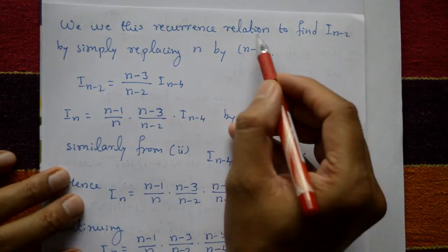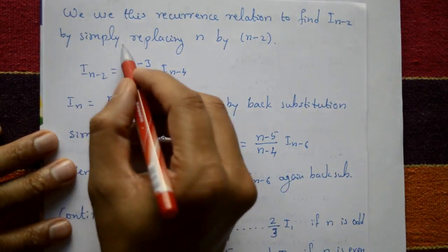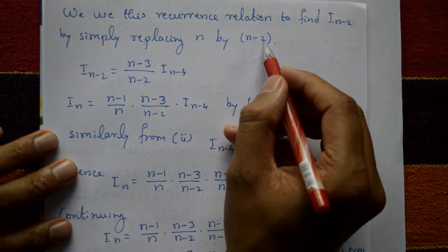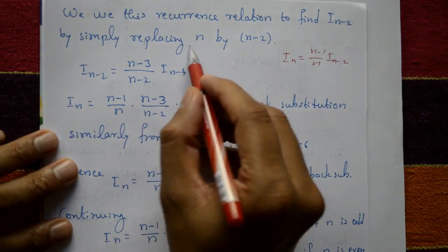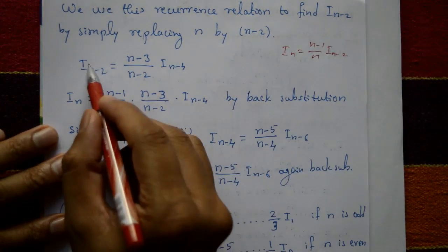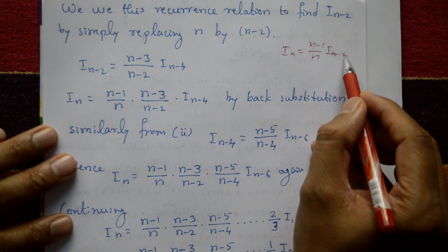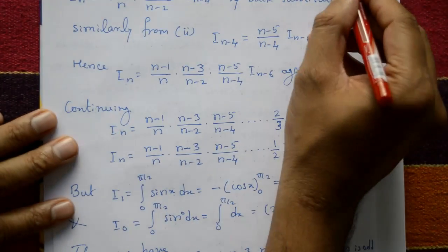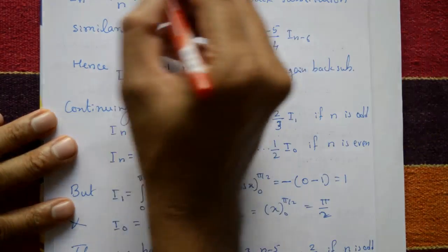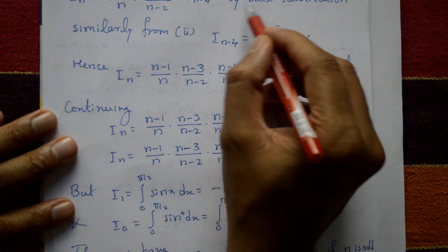Using this recurrence relation to find Iₙ₋₂: replace n by n−2 in Equation 2 to get Iₙ₋₂ = (n−3)/(n−2) · Iₙ₋₄. Substituting back: Iₙ = (n−1)/n · (n−3)/(n−2) · Iₙ₋₄.